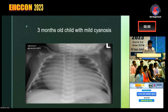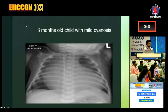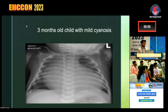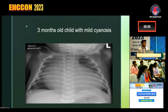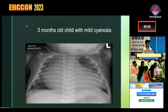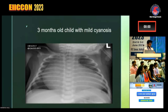These are a three-month-old child with mild cyanosis. Just look at the size of the heart — which is a big heart. This is also called box-shaped heart. The heart is so huge it occupies the entire chest and only the lungs are visible on the sides.